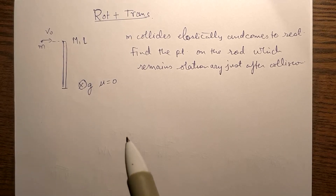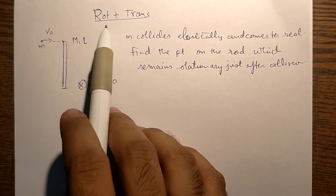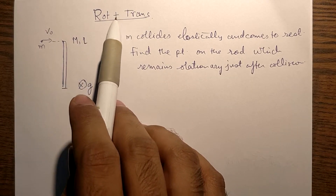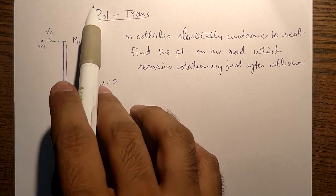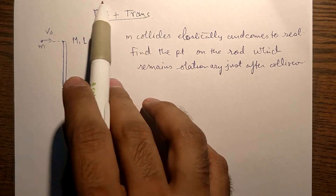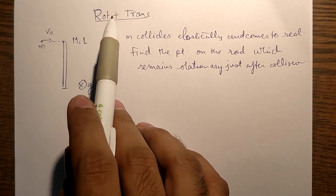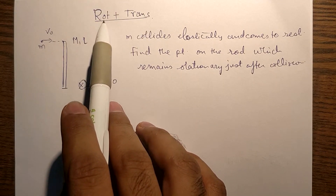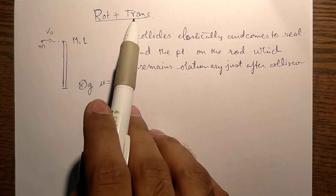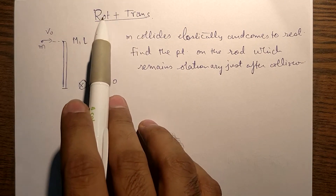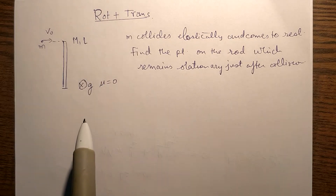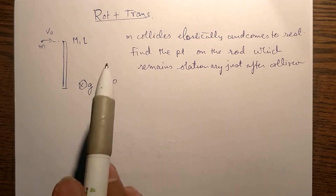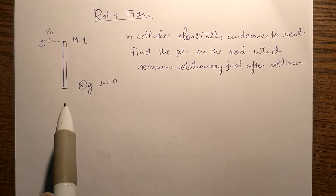When the axis of rotation is not fixed, the complicated motion can be understood by separating it into pure translation and pure rotation. Let's see one example to understand this better.